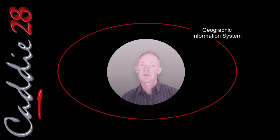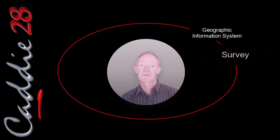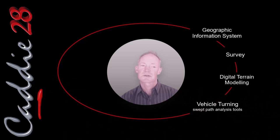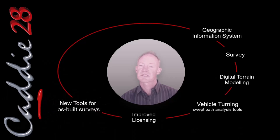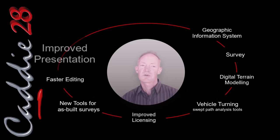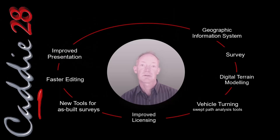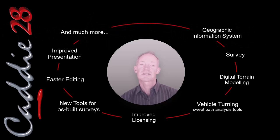What's new in Caddy 28? When we introduced GIS technology into Caddy a few years back, we knew there was a need for it, but we never anticipated quite how popular it would be. Caddy 28 adds a lot of new features to the GIS, making it easier and more flexible to use, and better integrated with other apps such as the Survey and DTM. We've also introduced the long sought-after vehicle turning or sweat path analysis tools, improved licensing, new tools for working with as-built surveys, faster editing in both 2D and 3D, and improved presentation. There are so many new features this year that we're highlighting just the more important ones. Other more trivial improvements you'll discover as you use 28 by reading the command line or on-screen prompts. Thank you for taking time out to watch the presentation, and I hope that you enjoy your Caddy 28.